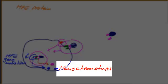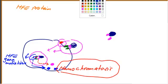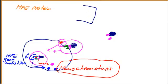To summarize: the HFE gene partially inhibits the release of iron from the endosome to the cytoplasm. If you have a knockout of the HFE gene, you will not have HFE protein, so you'll have a lot of iron released to the cytoplasm and into the circulation.